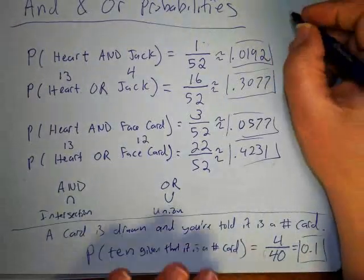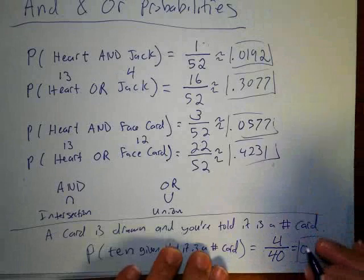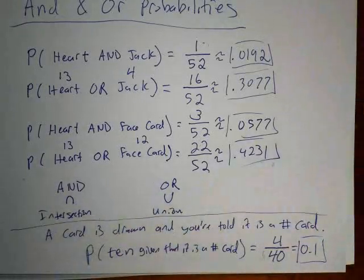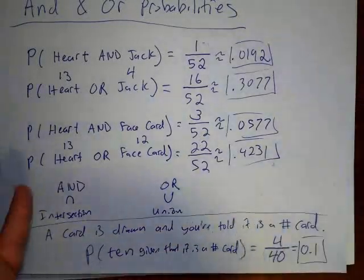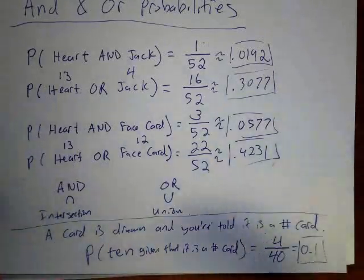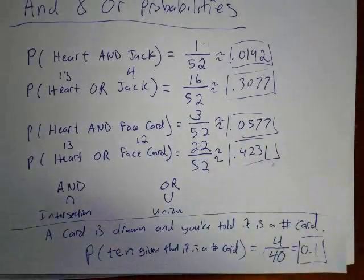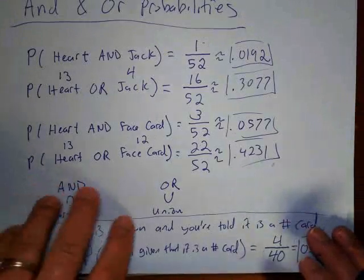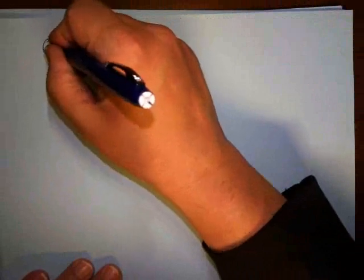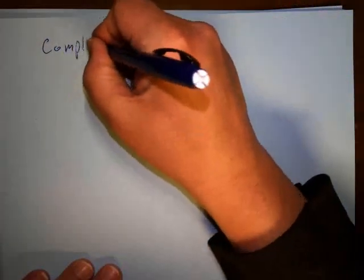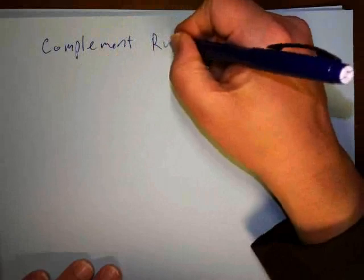If you're told something about the event that lets you shrink the sample space, that changes the probability. This idea is known as conditional probability, and there are sections in your book covering AND/OR probabilities and conditional probabilities. I'm just exposing you to the basic ideas. The last important technique I want to show you is called the complement rule.